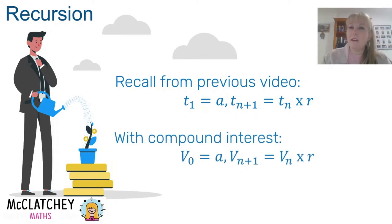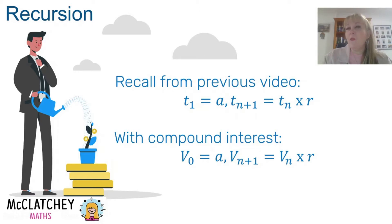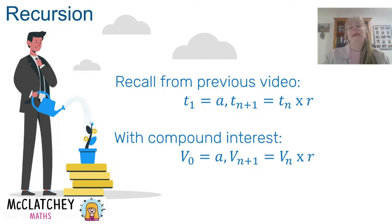For compound interest in a recurrence relation, we use different variables. Instead of the first term, we start with V0, which is our principal — our amount at the very beginning, our value. To find the next term in the sequence, we multiply by R to get V(n+1). Something very important to note: R is the common ratio — it is not the same as the interest rate. We need to transform the interest rate to find R.